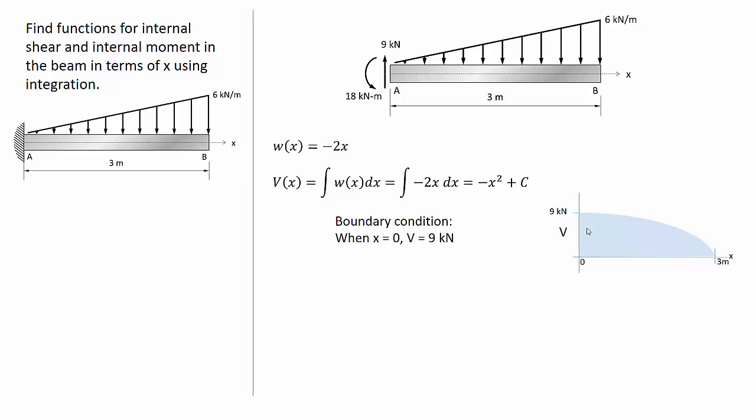At the far end of the beam, when x equals 3 meters, the shear must go to 0. I must have no shear when I get to point B. I'm going to use the first boundary condition. When x is equal to 0, the shear is equal to 9 kN.